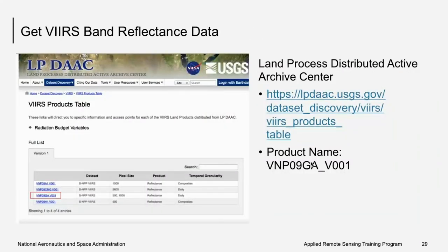To get VIIRS band reflectance data, LP DAAC is the recommended source — the same place where MODIS band data are obtained. The product name to focus on is VNP09GA, which contains VIIRS spectral bands for ocean color detection and can be downloaded for further analysis.